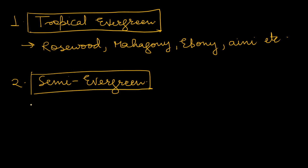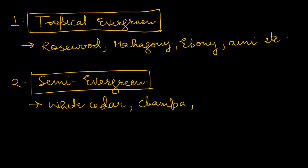Next, moving to semi-evergreen forests. In semi-evergreen forests, you will be able to find white cedar, champa, Indian chestnut, and kal, etc. These are the trees found in semi-evergreen vegetation.